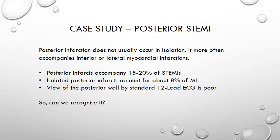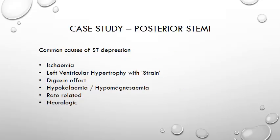Given that the standard 12 lead ECG can give us information regarding ischemia and infarctions of the inferior, lateral and anterior walls, how can we differentiate between ST depression caused by ischemia from the small percentage of MIs affecting the posterior wall? There are a number of other conditions that cause ST depression and T wave inversions — LVH with strain pattern is just one such example. For the purpose of this video, we will be considering ST depression from ischemic causes versus the ST depression suggestive of a posterior MI.